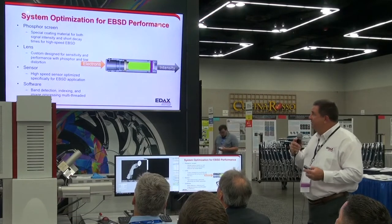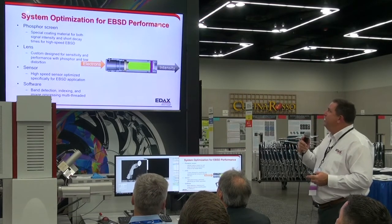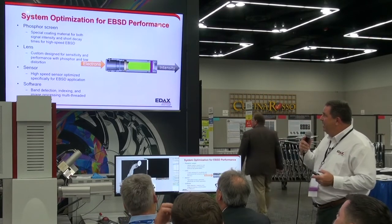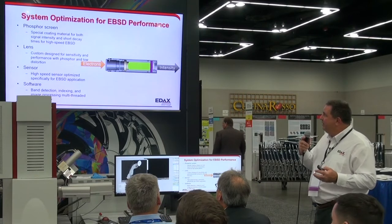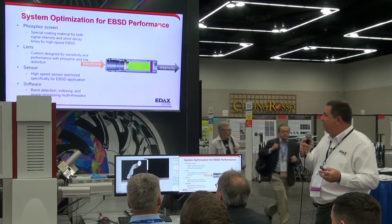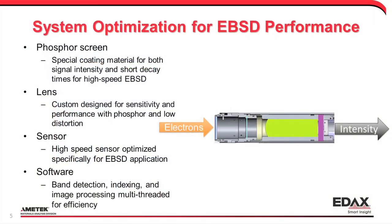When we talk about the entire system, it's a little beyond just the sensor. For high-speed operation, the entire system is optimized. The phosphor screen has been optimized for high signal intensity and low decay times. The lens has been customized for high throughput, high sensitivity, and low distortion. The sensor itself has been optimized for high sensitivity, low noise, and high-speed operation. The software has been multi-threaded for band detection, indexing, and image processing to allow operation at high speeds.